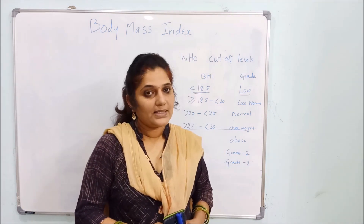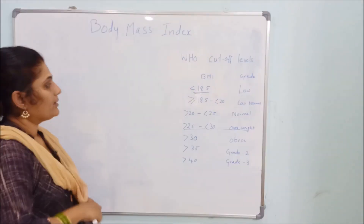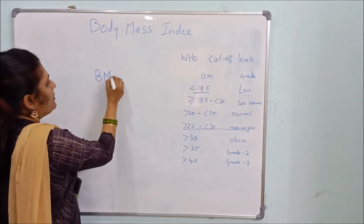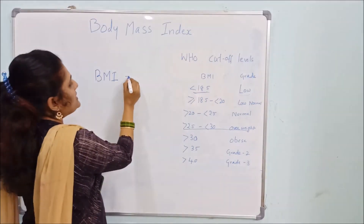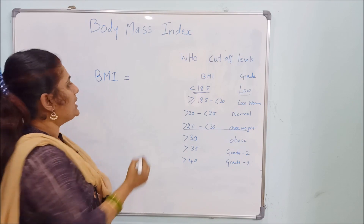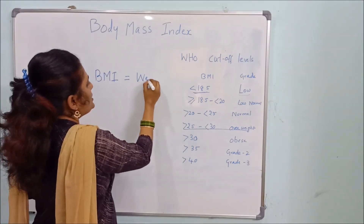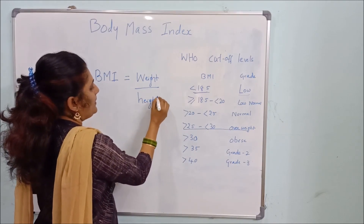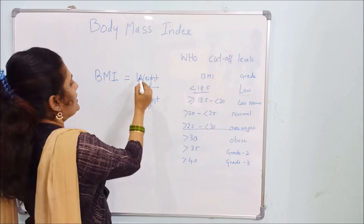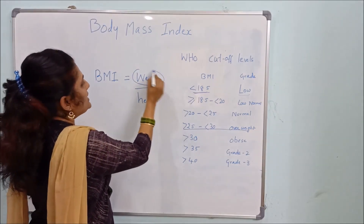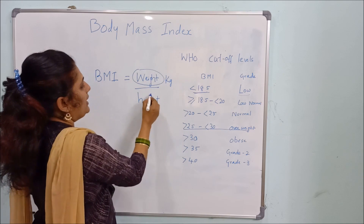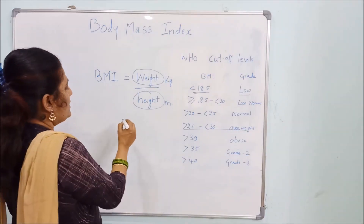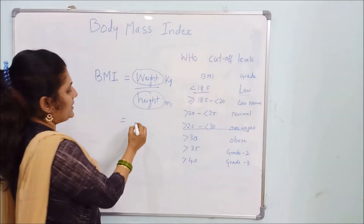BMI stands for body mass index and it is calculated using our weight and height — weight in kilograms and height in meters.